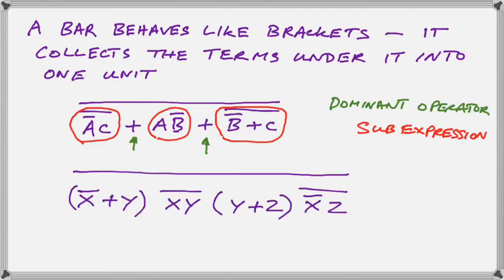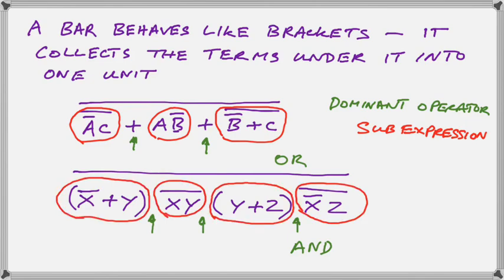So here's another example. Can you spot the dominant operator and the sub-expressions? If you said and, you would be correct, because and is the dominant operator between these sub-expressions. And there we have the sub-expressions circled in red.